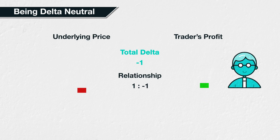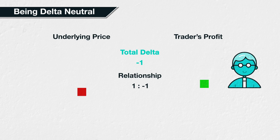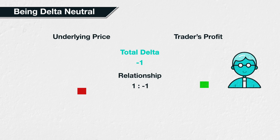With this knowledge that the options delta tells you what size position in the underlying is currently equivalent, it is possible to hedge your option delta by taking the opposing position in the underlying, such that you reduce your overall position's sensitivity to underlying price movements. If you reduce this down to zero by hedging all of your deltas, this is called being delta neutral.